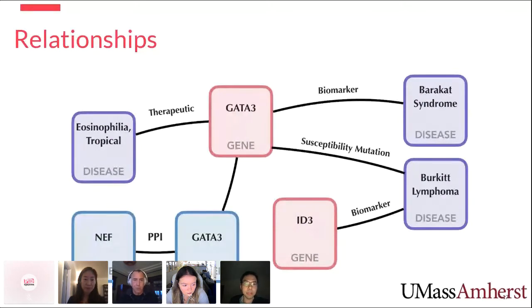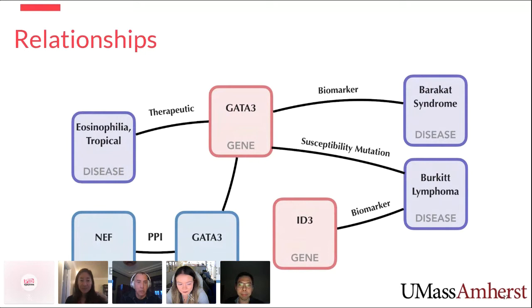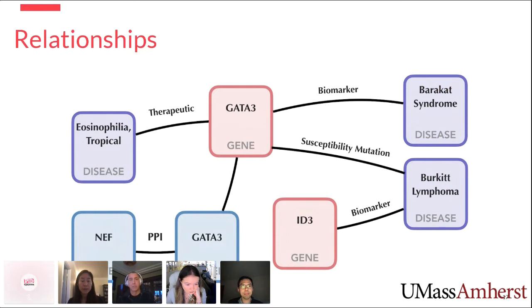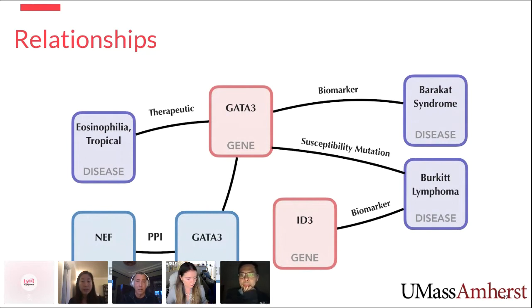Building off what Donghui mentioned, we use a large number of UMLS ontologies to identify biomedical entities in papers. One direction we're now going is to look at the relationships that exist between entities in the paper — for example, that gene GATA3 is a biomarker for Barakat syndrome. The boxes represent the entities, and the future work we're starting is on the relationships side, hopefully complementing work on the Mondo ontologies discussed during the plenary.